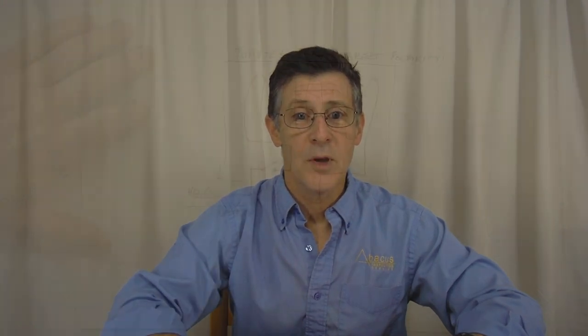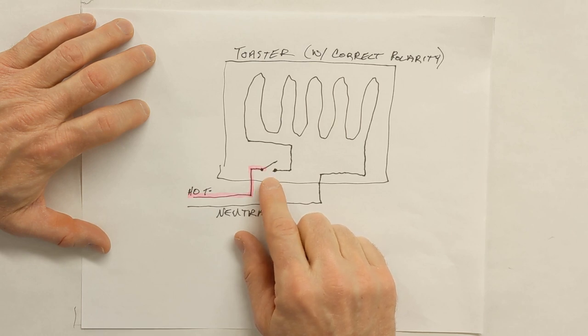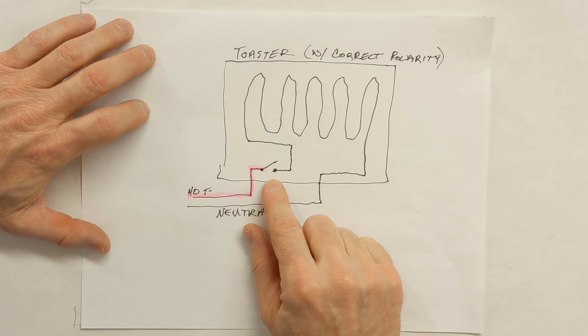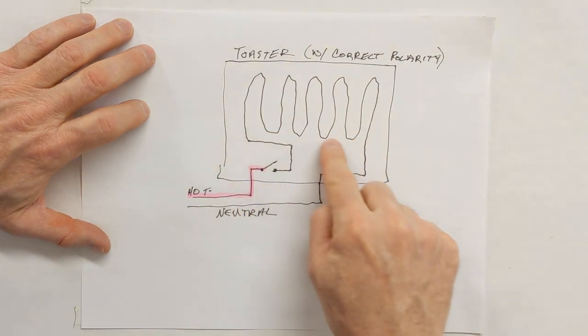The toaster also has a switch that turns it on and off. For safety reasons, the switch is put just inside the toaster or any appliance on the black or hot wire where it enters the appliance, like you see here. This shuts off the electrical pressure before it gets to all the wiring inside the toaster.